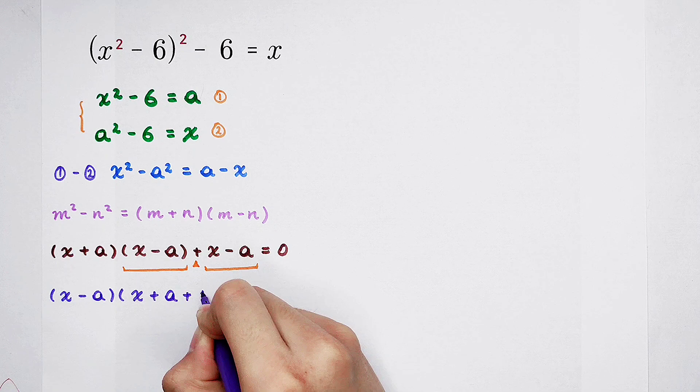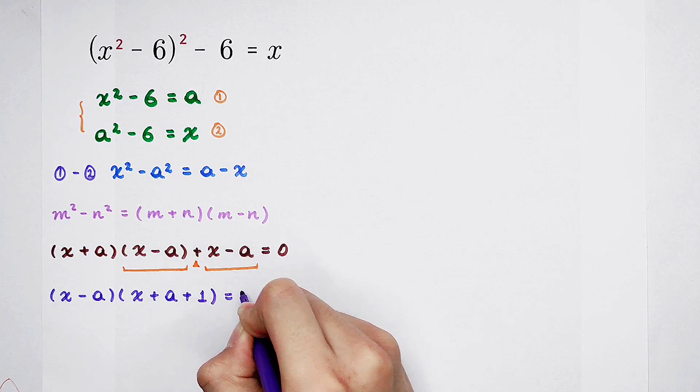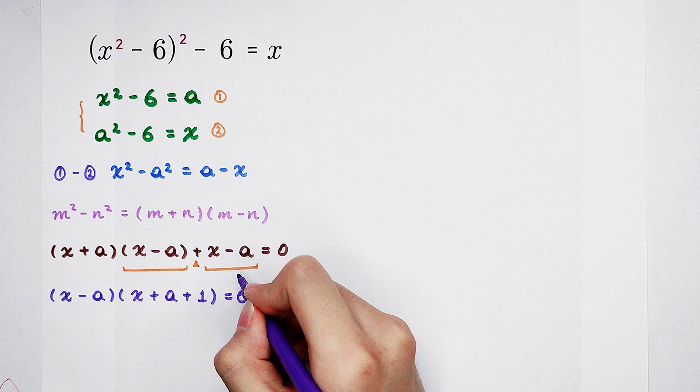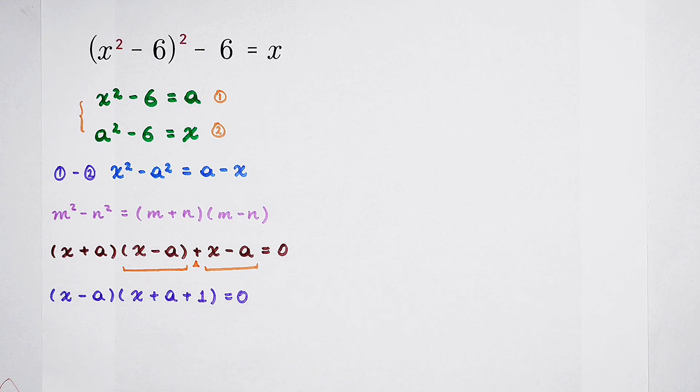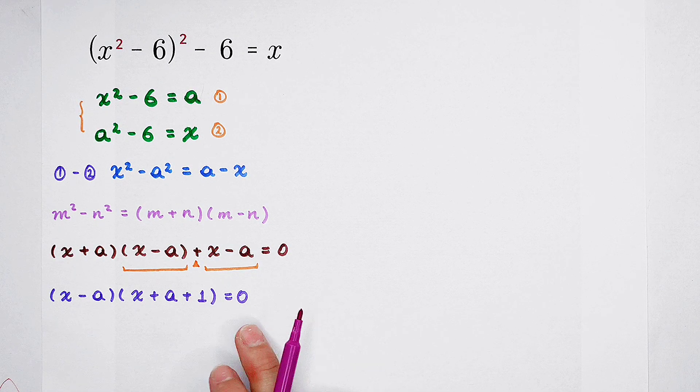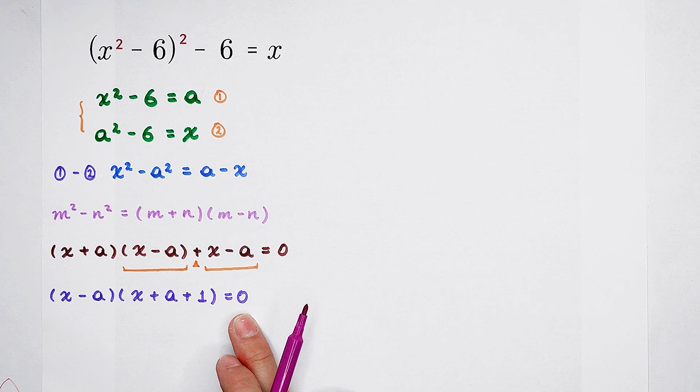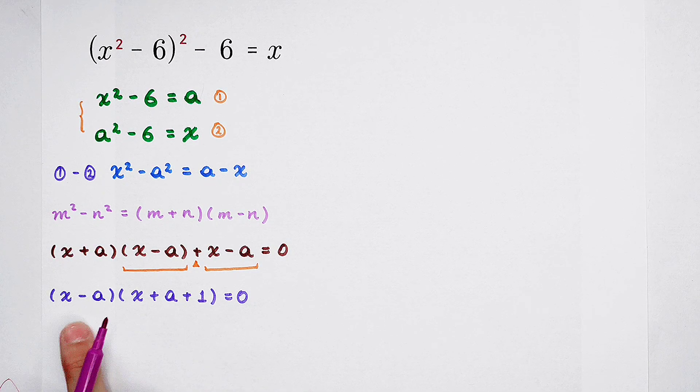And here plus one. Don't forget. Since x minus a divided by x minus a is one. The left-hand side is a product, and the right-hand side is just zero.